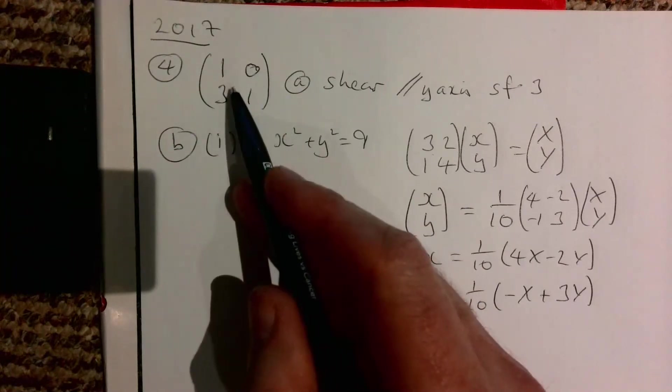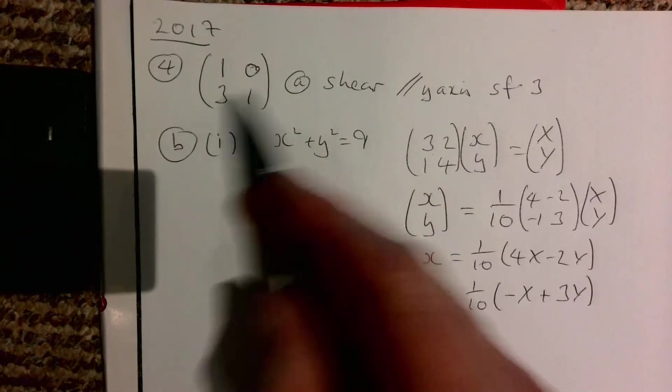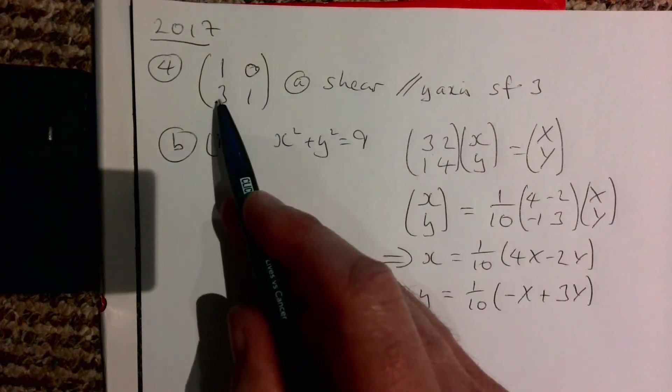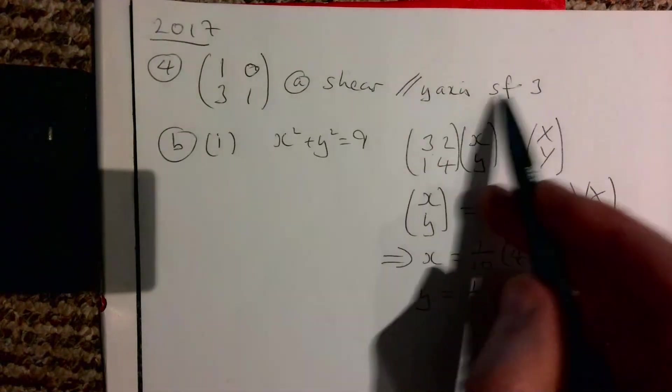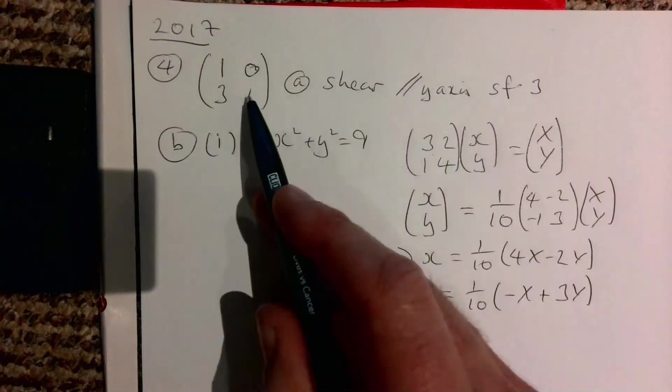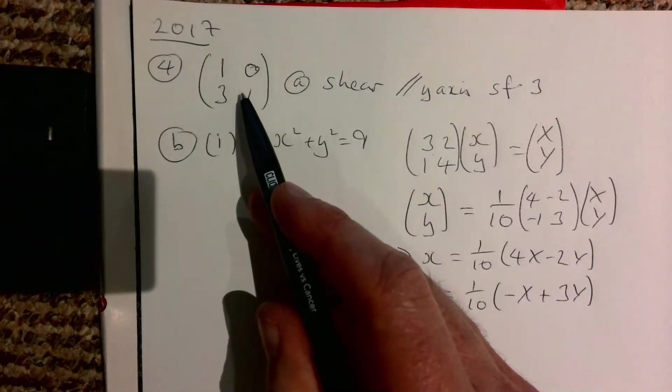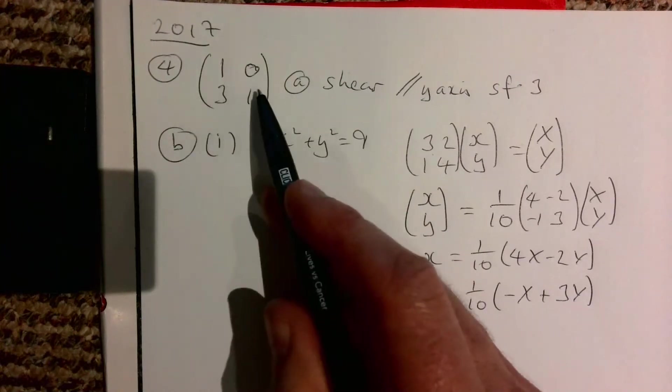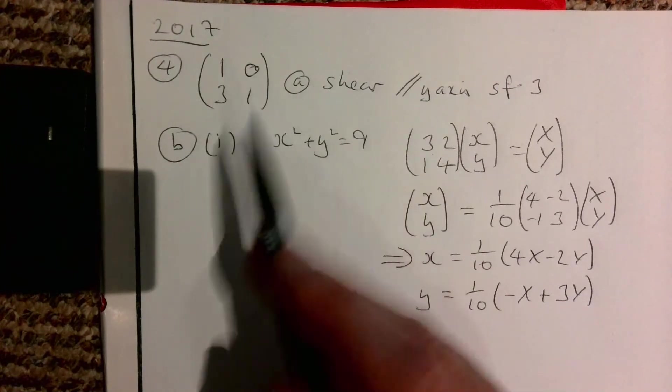We should be well used to something like this. Hopefully you recognize it as a shear, and it's going to be parallel to the y-axis. Because of this 3 here, then it's going to be scale factor 3. We should know this. If you don't know it, maybe try the unit square and put in the coordinates for the unit square and see what happens. You'll hopefully get an idea then it's going to be a shear going in that direction there.